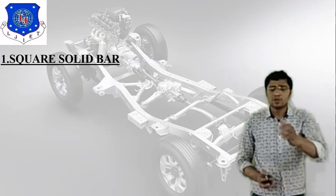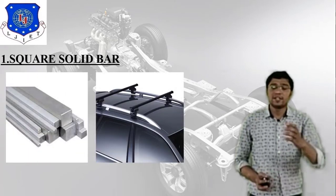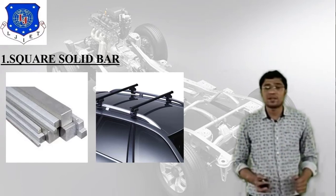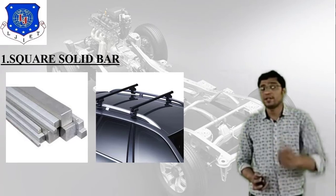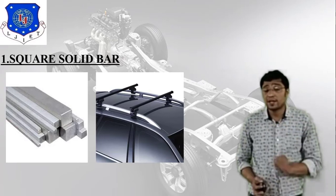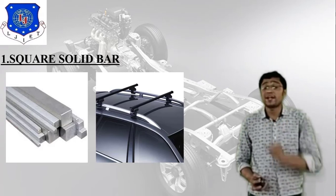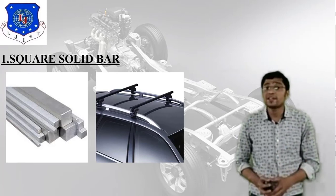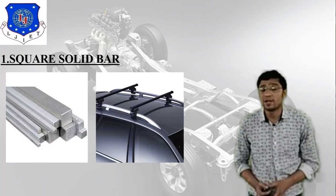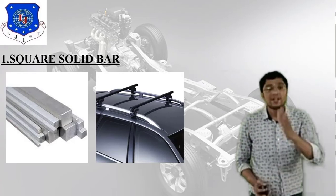The first type is the square solid bar. In the image, the left side shows the square solid bar — it is not hollow, it is a solid square bar. Different sizes are available. On the right side you can see its application: in a car, at the topmost portion, you can find this type of square solid bar.